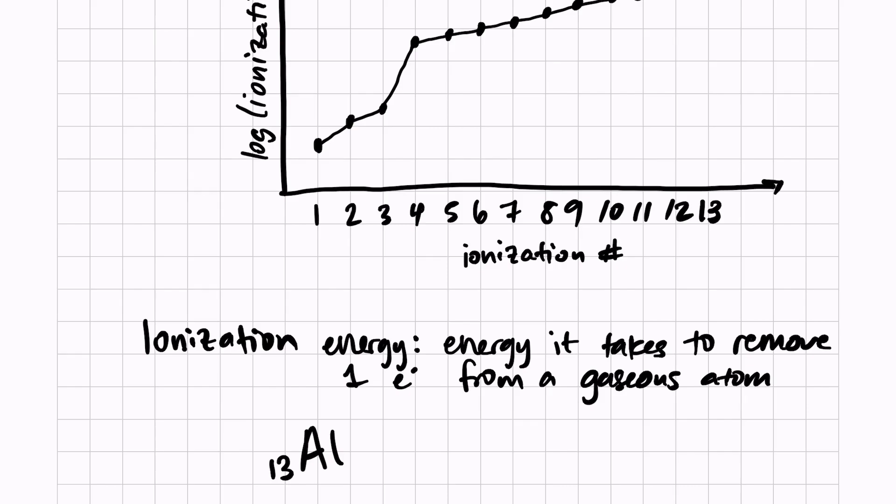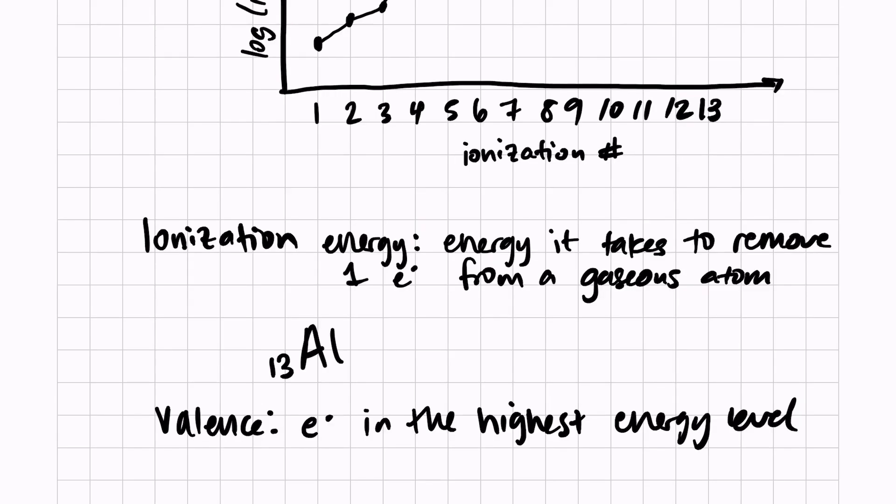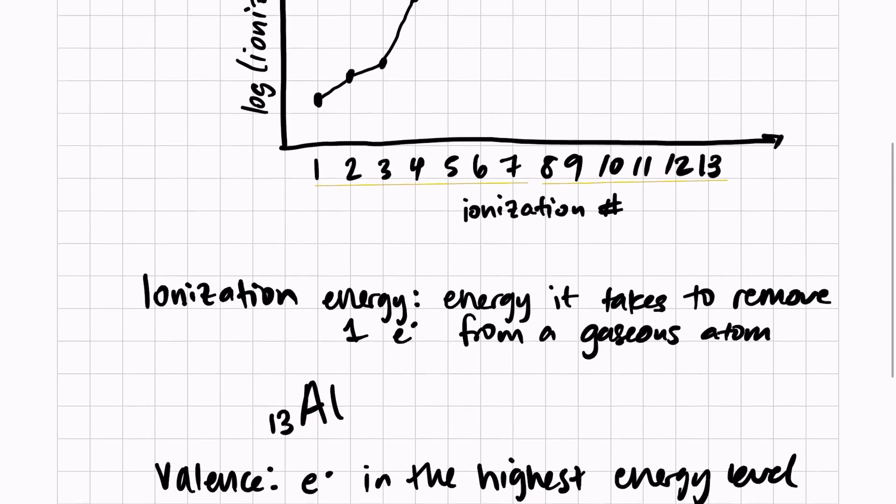Just a few terms to remember: valence electrons are the electrons in the highest energy level, and they are the electrons involved in bonding.